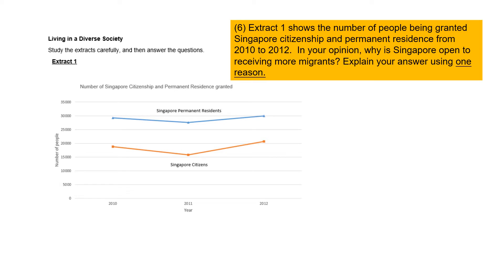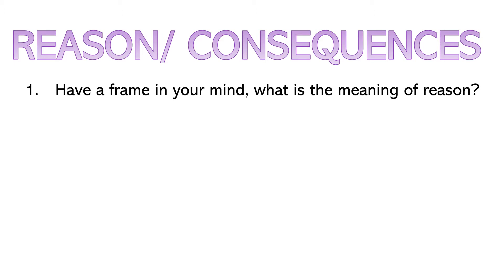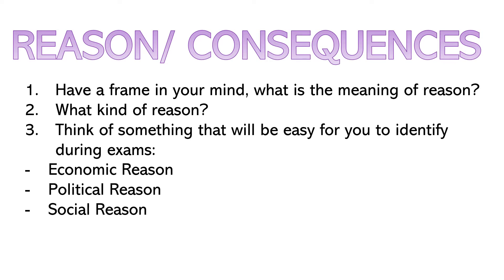Extract 1 is a graph showing the number of Singapore permanent residents, which is very high. The question asks: in your opinion, why is Singapore open to receiving more migrants? This is a reason-type question. Think of it in terms of economic reason, political reason, or social reason. You only have to give one reason, so let's look at the economic reason — our aging population and declining birth rate.